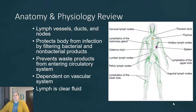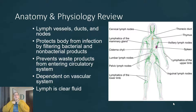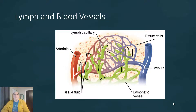Now lymph is normally a pretty clear type of fluid and it's going to be added back into the cardiovascular system, specifically dumped back into the subclavian veins, and then it turns back into the plasma of the blood. This picture right here kind of shows you how the lymphatic vessels are actually going to be intertwined with those capillary beds.